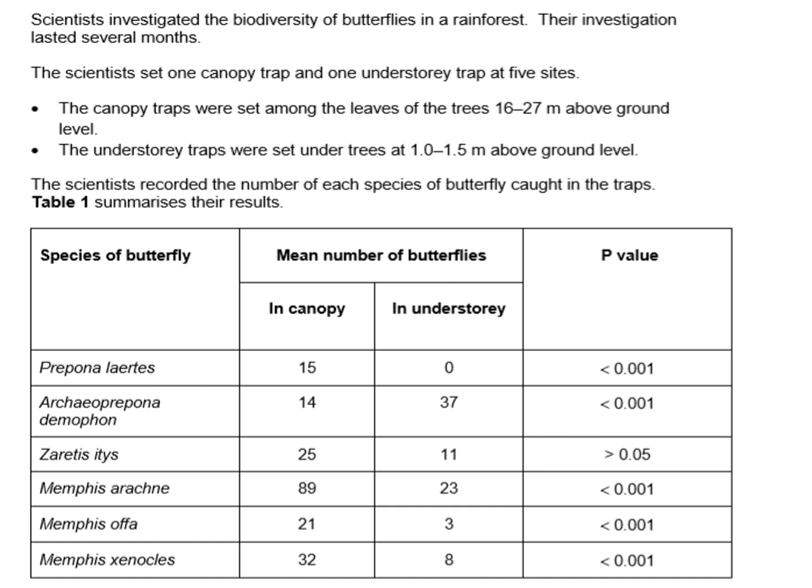We're now given information about an investigation into the biodiversity of butterflies in a rainforest, with data in a table showing mean numbers of butterflies either in the canopy or the understory. Scientists set one canopy trap to capture different species of butterflies in the upper leaves of trees, and the next trap was set much further down in the understory — beneath the canopy of leaves and nearer to the ground.